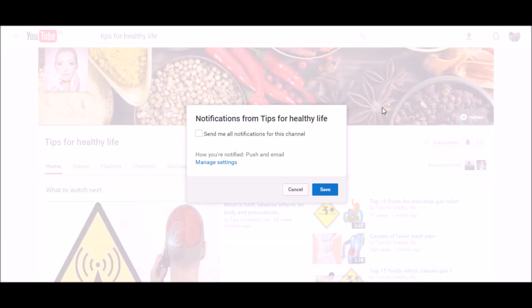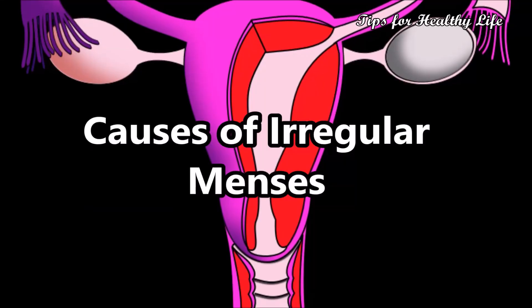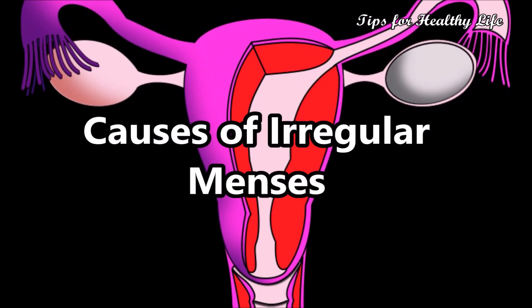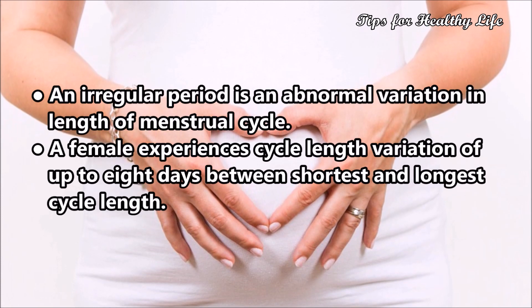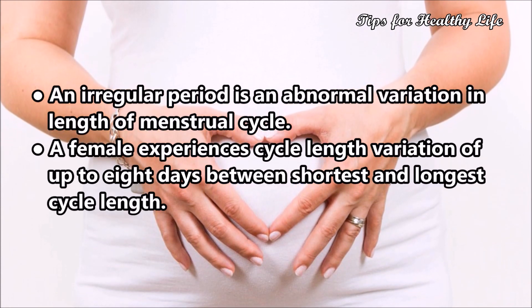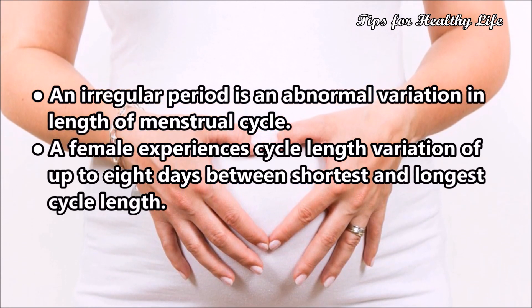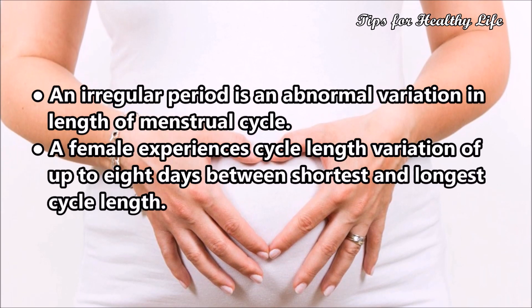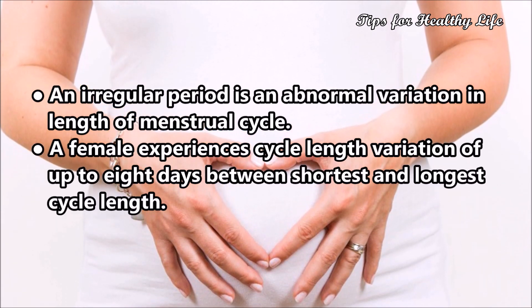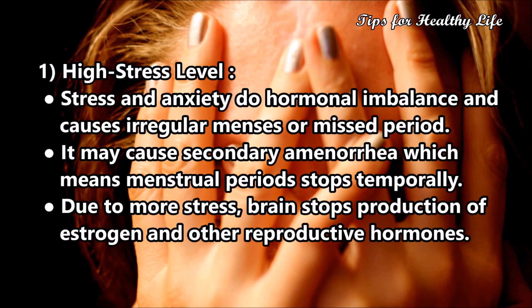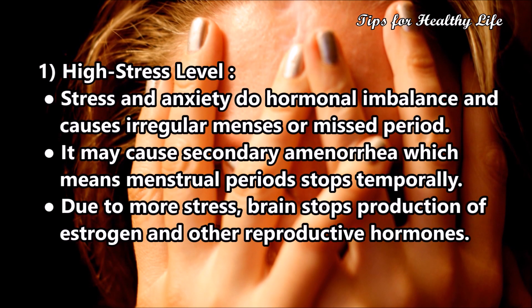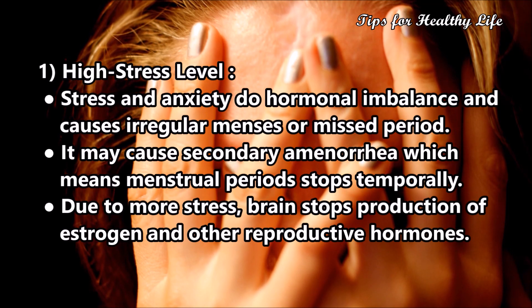This video covers the causes of irregular menses. An irregular period is an abnormal variation in length of the menstrual cycle. A female experiences cycle length variation of up to eight days between the shortest and longest cycle length. Cause 1: High stress level — stress and anxiety cause hormonal imbalance and lead to irregular menses or missed periods.